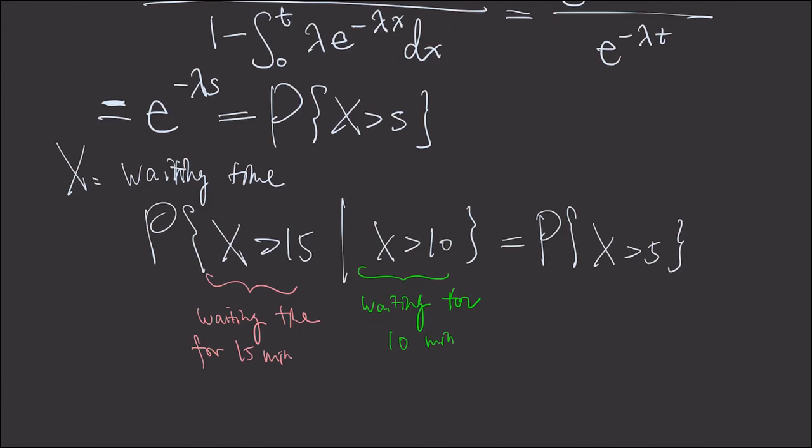So, this means the probability of you waiting for 5 extra minutes is the same thing as you wait for 5 minutes at the first place.